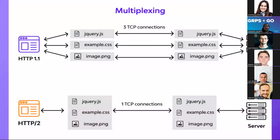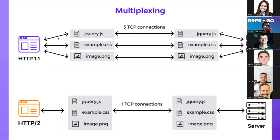One of the key concepts of gRPC is streaming, where many processes can take place in a single request. This is possible because we are using HTTP/2. One of the main differences between HTTP/1 and HTTP/2 is that in HTTP/1 we need to do a request for every resource that we need, as we can see in this image — we have to create a connection for every resource.